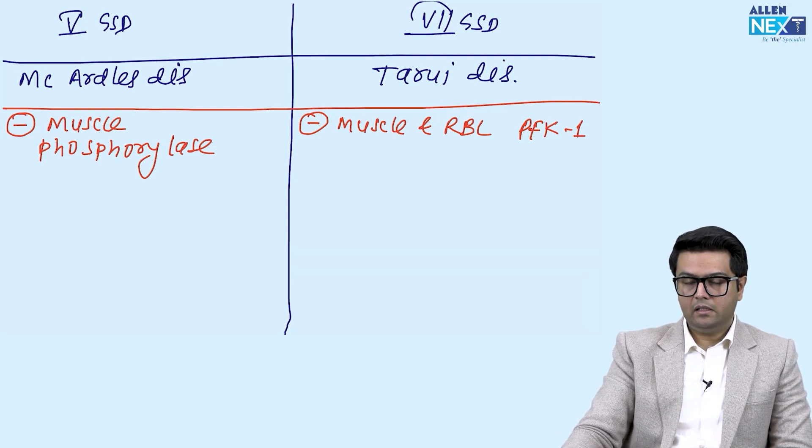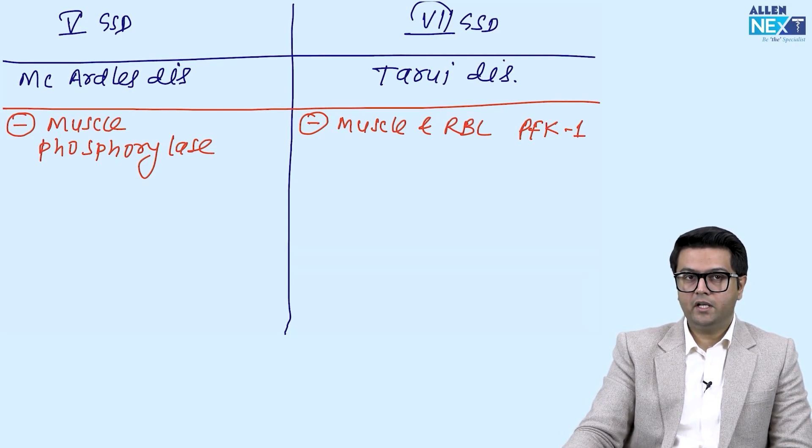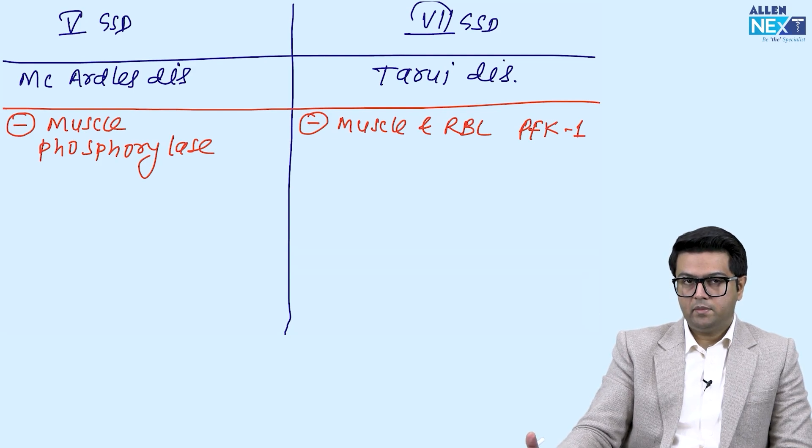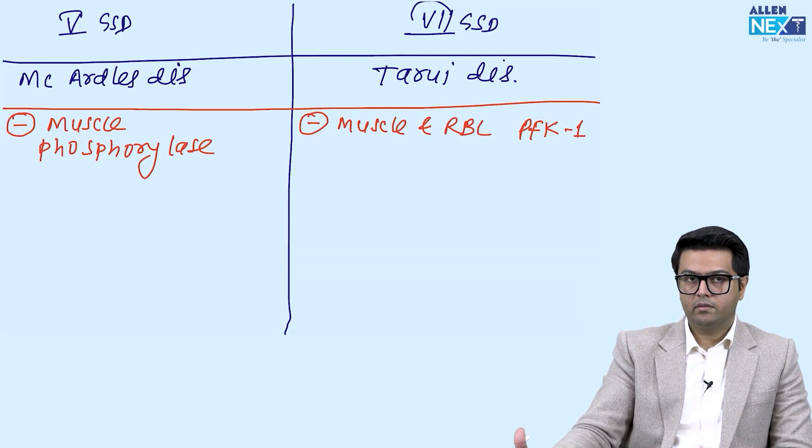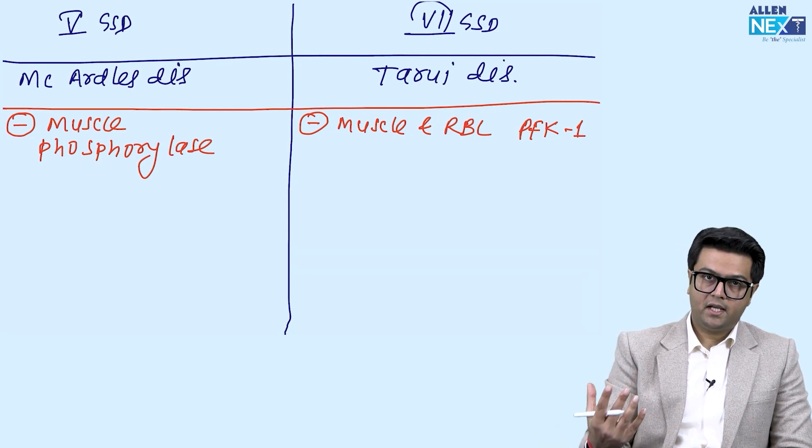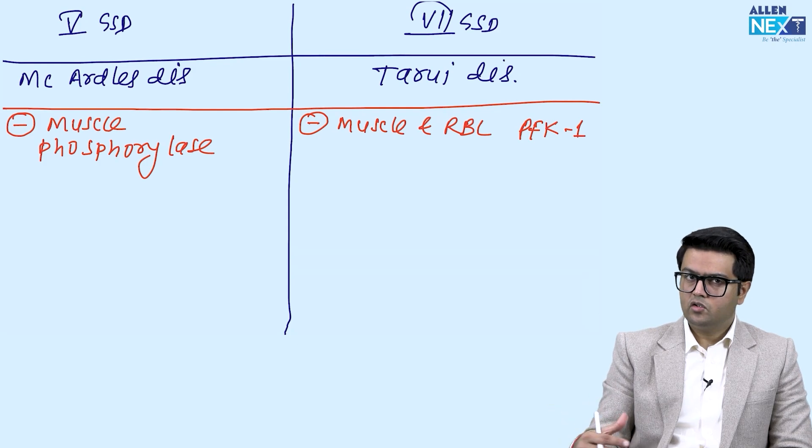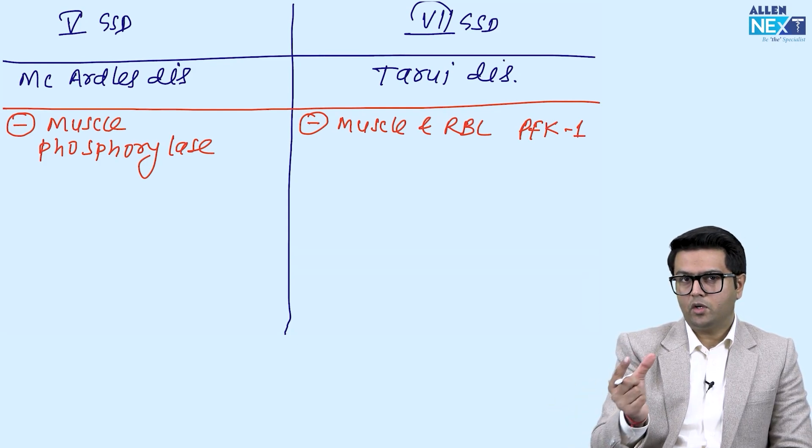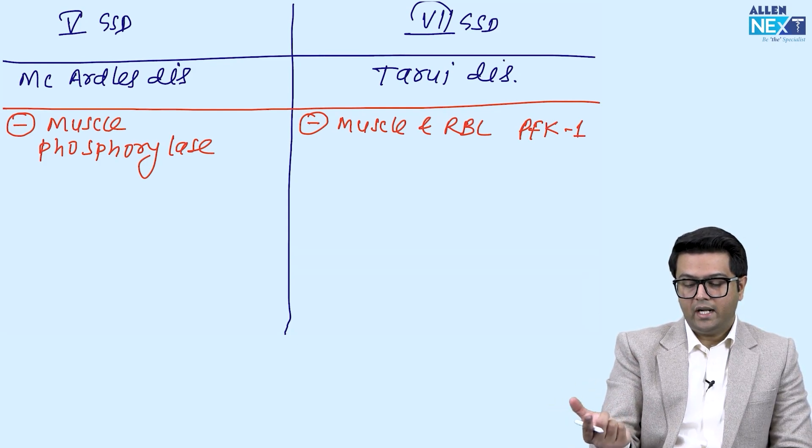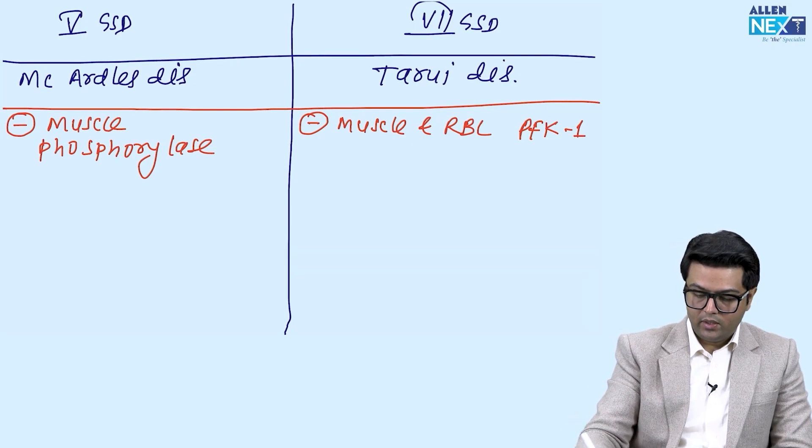The PFK-1 of the muscle and RBC, they share some common units. The muscle isoenzyme has M subunits that are also present in the RBC, so that will also be affected because they are coded by the same gene. That is why RBC is also affected here.